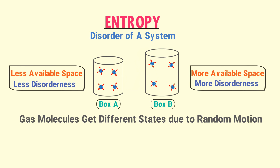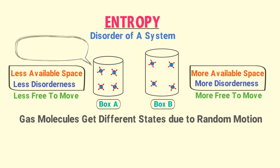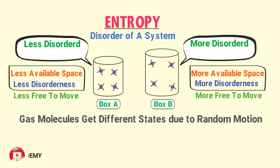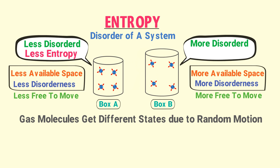Simply remember that gas molecules in box A are less free to move while gas molecules in box B are more free to move. Thus system A is less disordered and has less entropy, while system B is more disordered and has more entropy. Over time, due to external factors, the state of gas molecules changes, hence entropy changes.